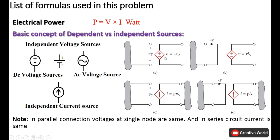In types A and B, we have two types of dependent voltage sources, and in types C and D, we have two types of current dependent sources. If a dependent voltage source output is being controlled by a voltage value, it will be known as a voltage controlled voltage source. If the output of a dependent voltage source is being controlled by current, it will be known as a current controlled voltage source.